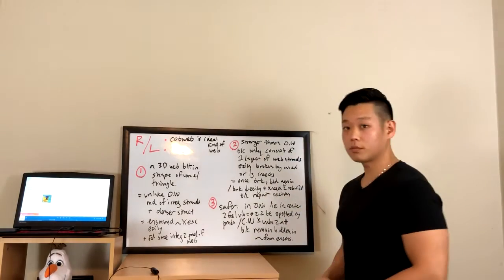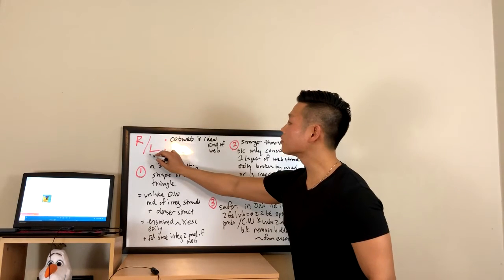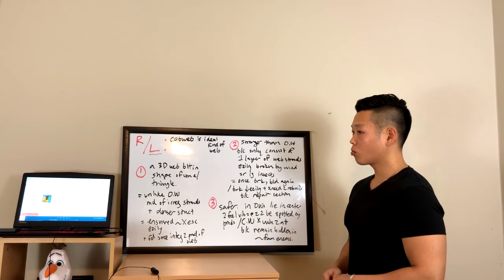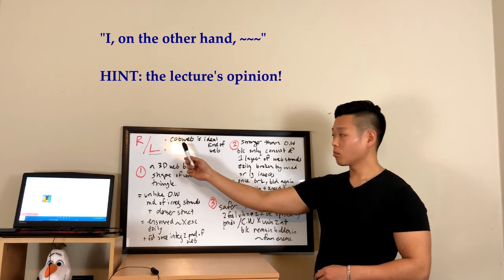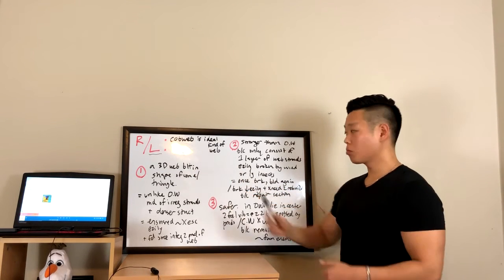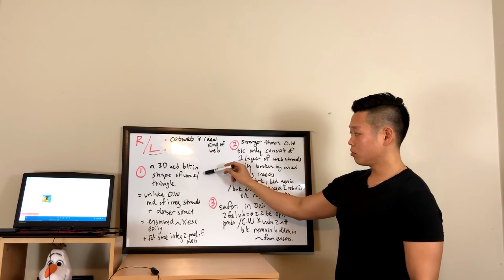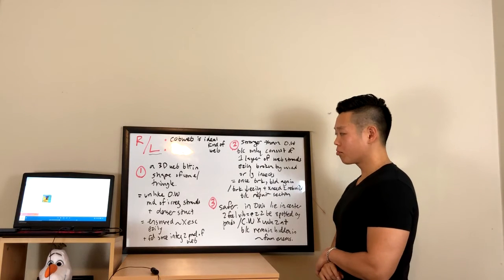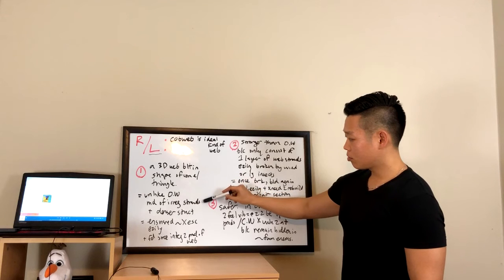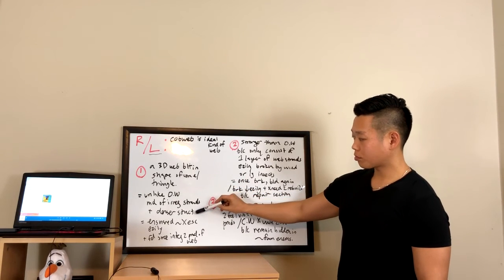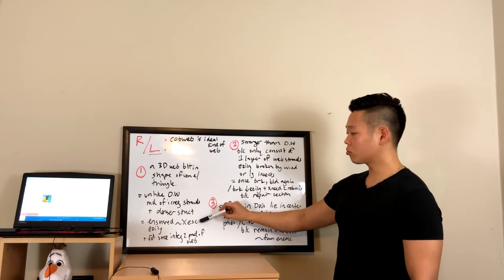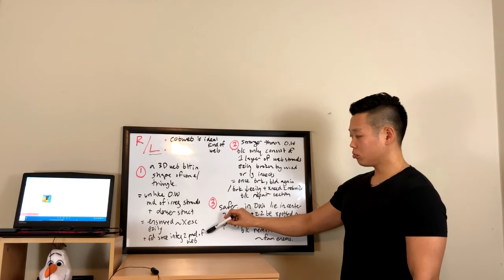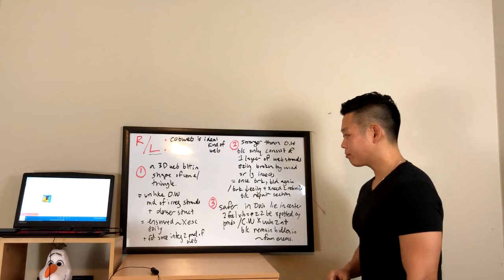The lecture begins: 'As you probably know, spiders use webs to catch their prey. They may use either orb webs or cobwebs. Some believe orb webs are better; I, on the other hand, favor the cobweb as the spider's ideal kind of web. The cobweb is a three-dimensional web built in the shape of a cone or triangle, located in the branches of trees, plants, or man-made structures. Unlike an orb web, a cobweb is made of irregular strands of spider silk and has a much denser structure, so ensnared insects cannot escape as easily. The spider's food source is integral to its web production, so it cannot afford to let prey escape.'